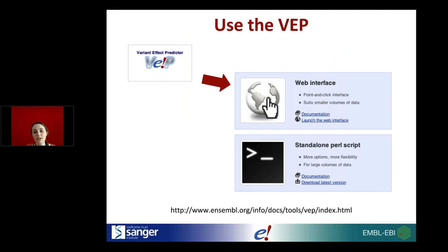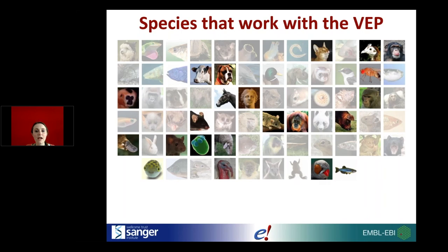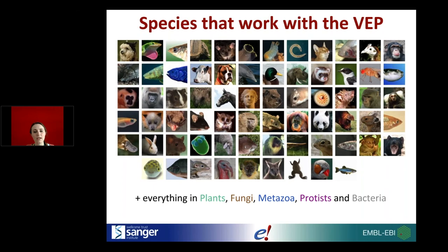The VEP is what you use for this. I'm going to show the web interface today, but there is also a standalone script you can run without any coding — just commands in the command line. The script is more suited to larger-scale analyses; you can put millions of variants into the web interface but it'll take a really long time, so for that I'd recommend the standalone script. Every species in Ensembl will work with the VEP regardless of whether there's known variation data — it compares variants to genes.